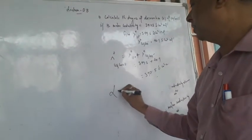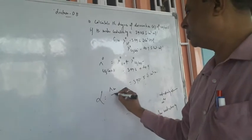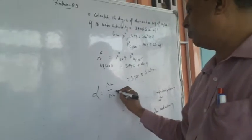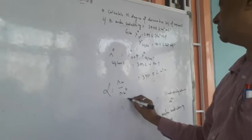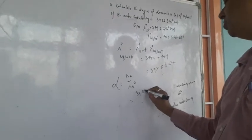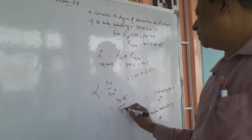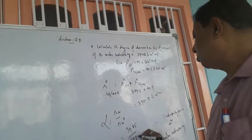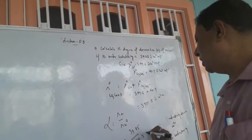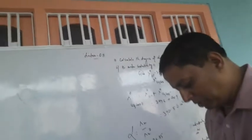We have to calculate lambda m standard at infinite dilution. Alpha is equal to λm divided by λm standard, that is 39.05 divided by 390.5. This gives the degree of dissociation.